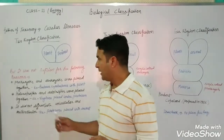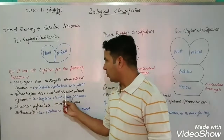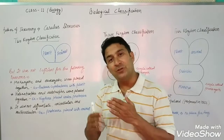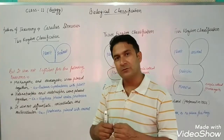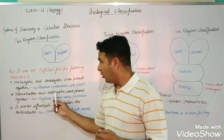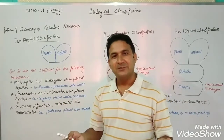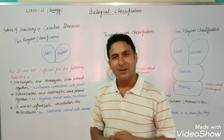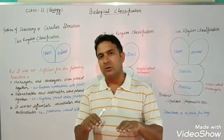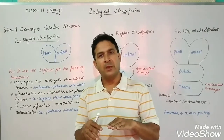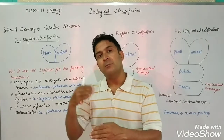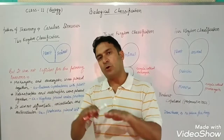The second drawback is that heterotrophs and autotrophs were placed together. Heterotrophs are animals that depend on other animals or plants for food — they cannot synthesize their own food. Autotrophs, like green plants, can synthesize their own food through photosynthesis. Since their modes of nutrition are completely different, they should not be classified together.